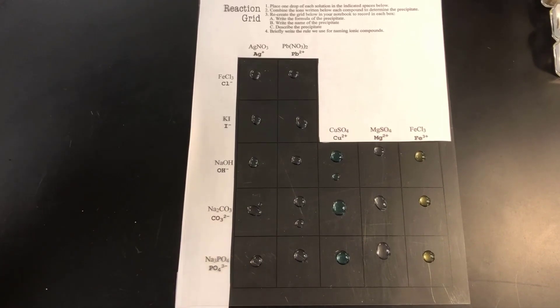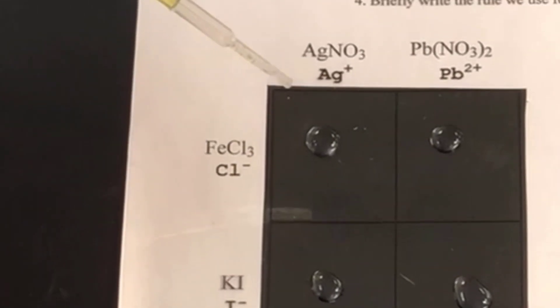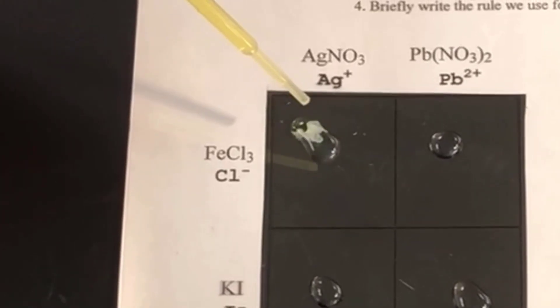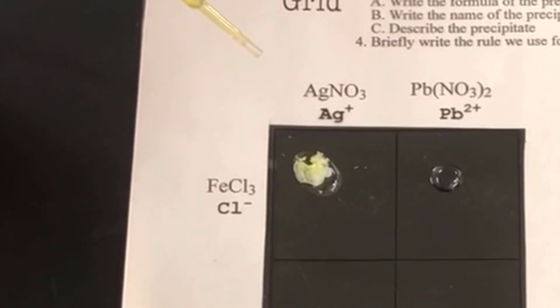Now we're going back to the FeCl3 because now we're going across. Before we were going vertically, now we're going horizontally. And FeCl3 is the first one at the top. Observe what happens.